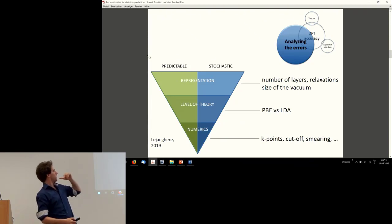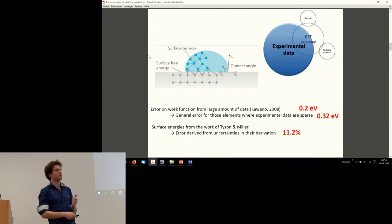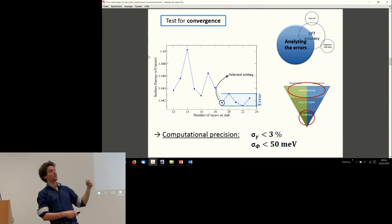I said the second tier, the level of theory, is the main interest of this work, but let's try and estimate the bottom one and the top one first. You can do this in large part with convergence testing. So this is generally what you do for any study—you do your convergence testing of everything you can, your computational parameters. For work functions we ended up with a worst case scenario of 50 millivolts, for surface energies three percent. These were much smaller than the experimental errors, about five to six times larger, so these are of no significance to the statistical procedure.